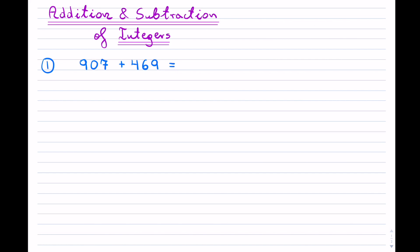Whenever you do have two positive numbers, you can think of money. When you're going to have 907 dollars and you're going to add another 469 dollars, your account is going to grow. Most students don't really have much issue with this particular case — it's a matter of practicing it enough times. When you line these up, make sure that the place values align.